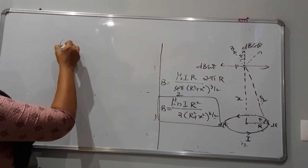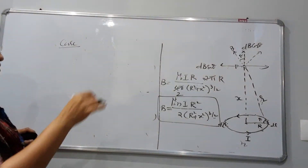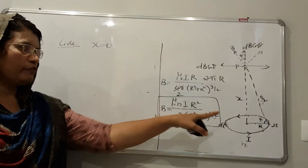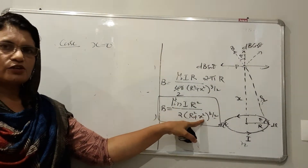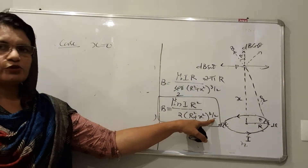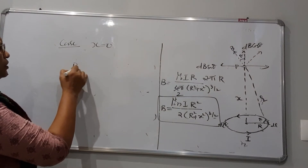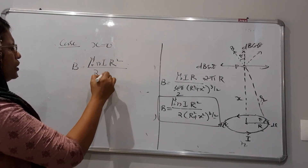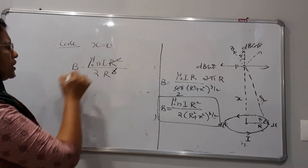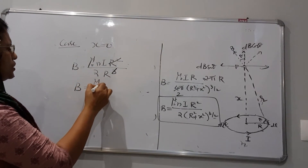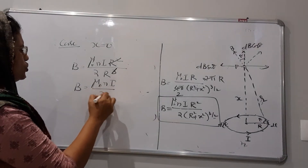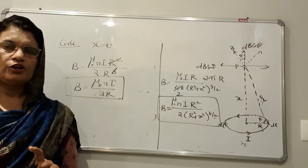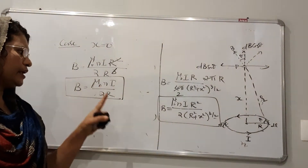When point P is at the centre of the loop, x = 0. When x = 0, the term (R² + x²) = R², and (R²)^(3/2) = R³. Therefore B = μ₀nIR² / (2R³), and R² and R³ cancel to give B = μ₀nI / (2R). This is the magnetic field intensity at the centre of a current-carrying loop with current I, n turns, and radius R.